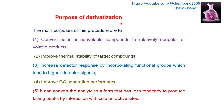Why are we derivatizing the analyte molecule? What is the purpose of derivatization? The first and major purpose is to convert the polar or non-volatile compound to a relatively non-polar and volatile compound. Volatile compounds are the basic requirement for GC. Here we will replace the active hydrogen, which forms hydrogen bonds, creating polarity in the analyte molecule and making it non-volatile. We replace that active hydrogen with a compound that will make the analyte non-polar and volatile.